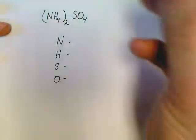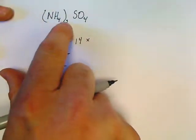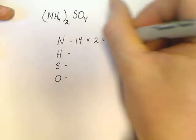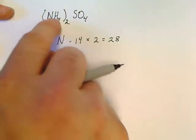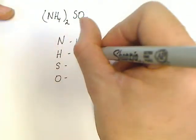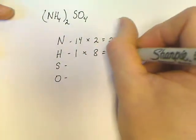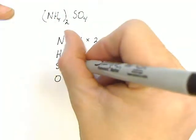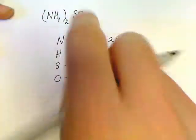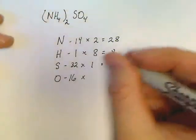Now we can come back through here and start working this out. Nitrogen weighs 14. There are two nitrogens because this means two times one, so times two nitrogens is 28. Hydrogen weighs 1. Two times four is eight, so 1 times 8. Sulfur weighs 32 times 1, which is 32. Oxygen weighs 16 times four, and that's 64.